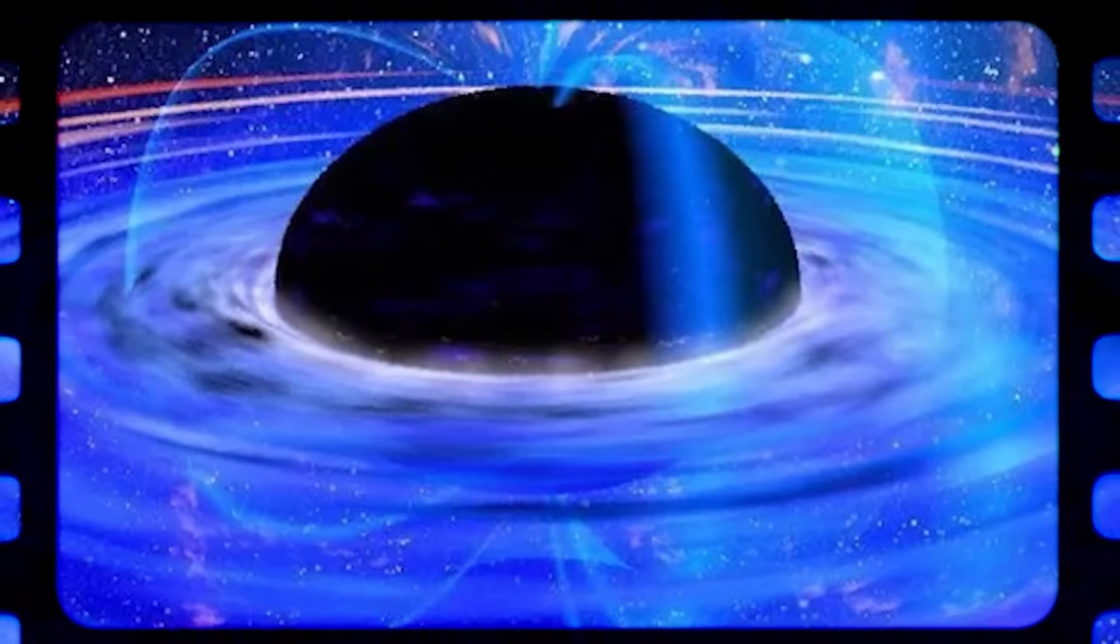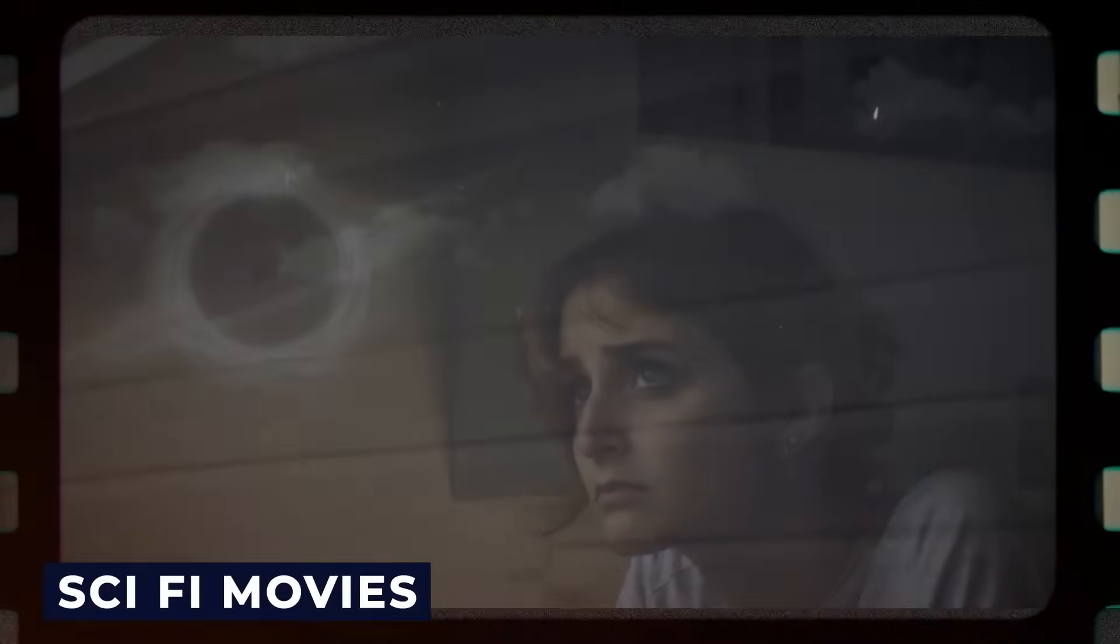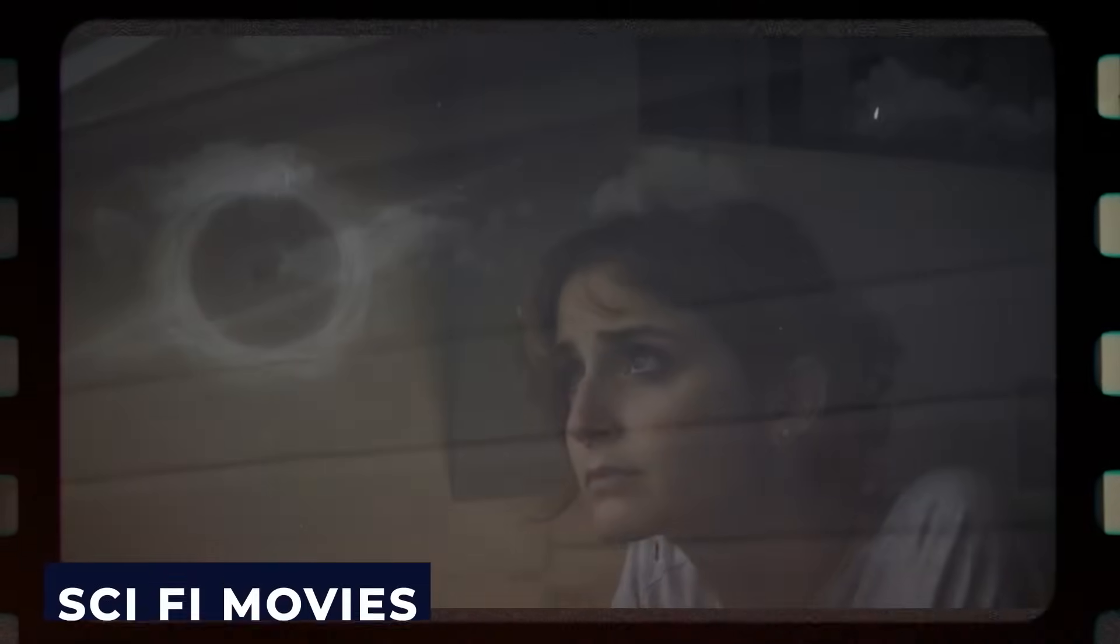This event horizon can fit inside Mercury's orbit with enough space to spare. Also, its radius has been found to increase in direct proportion to the black hole's mass.